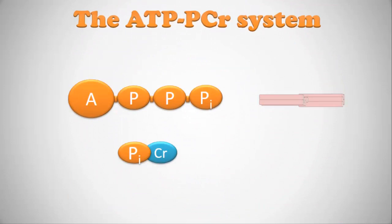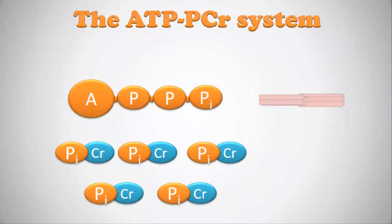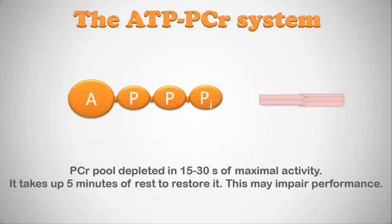There are a couple more important points about the ATP-PCR system. We have a limited pool of phosphocreatine inside the muscle. When exercising at very high intensity, somewhere between 15 to 30 seconds, this entire pool of phosphocreatine will be absolutely depleted. So you'll run out of the ability to regenerate more ATP, which will impair your ability to perform at high intensity.